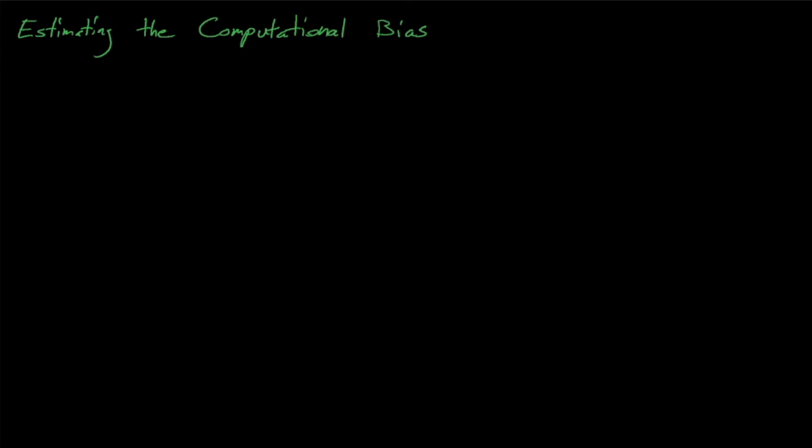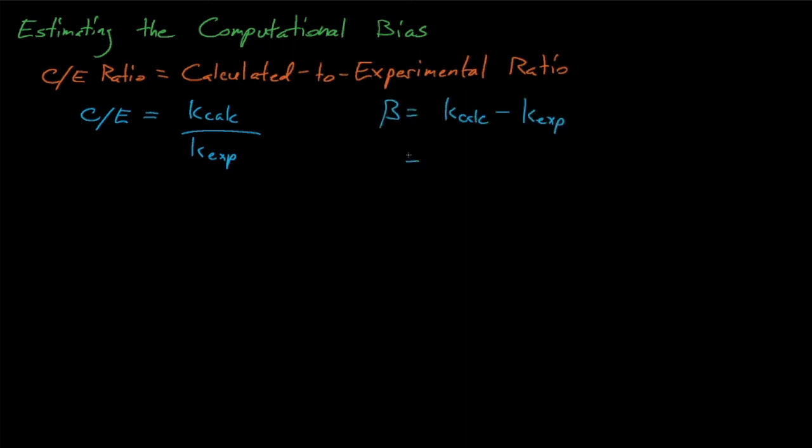Estimating computational biases generally involves estimating C over E ratios, which are the ratio of the code's calculated eigenvalue to its experimentally measured integral benchmark eigenvalue. If we know the C over E for a target application and the calculated K effective from our code, then we can use these two quantities to estimate the true experimental K effective for that system if it were to be built and to exist.